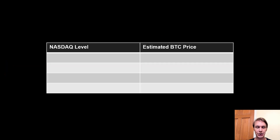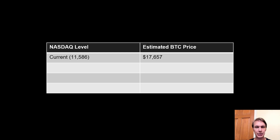What I wanted to do is show that if we have this model to get estimates of Bitcoin's price based on different NASDAQ levels, we can test different hypotheses. The current estimate for Bitcoin's price, based on the NASDAQ being at 11.5k, is that Bitcoin's price would be at 17.6k. That's a little bit below where we're currently trading, but it's in the general ballpark — which is why I'm saying not to take this too literally, just as ballpark estimates.